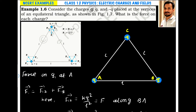Consider the charges Q, Q and minus Q placed at the vertices of an equilateral triangle as shown in the figure. What is the force on each charge? Here we have an equilateral triangle. On vertex A we have charge Q, on vertex B we have charge Q, and on vertex C we have charge minus Q. We are asked to find the force on each charge.